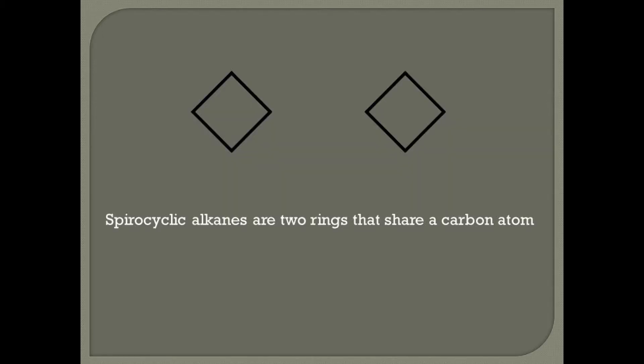Now, spirocyclic alkanes are just a subcategory of bicyclic alkanes. The difference between them and the bicyclic compounds in my other video is the fact that spirocyclic alkanes actually share an atom, not a bond. So anytime you have two rings that share a carbon atom, they are called spirocyclic alkanes.